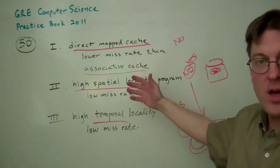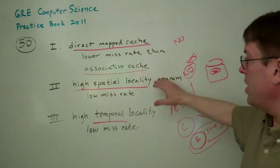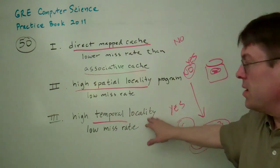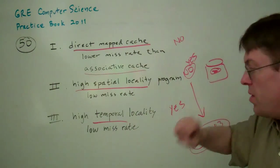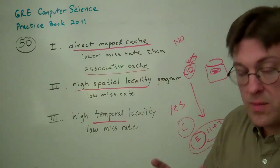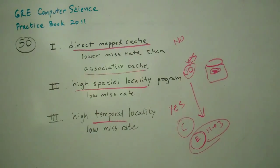Anyway, hopefully the discussion of the direct map cache and the associative cache, go back and check out 27 for that one. And then the spatial locality and temporal locality. Spatial locality means it's close physically on the disc that it grabbed it from. Temporal locality means you used it recently, so it's still in the cache. Hopefully that's helpful for you.